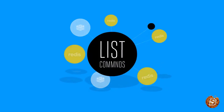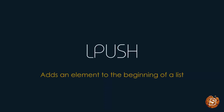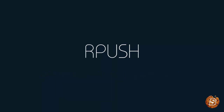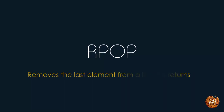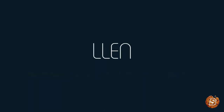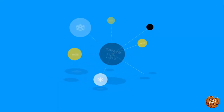Now let's look at the list commands used to work with lists in Redis. LPUSH adds an element to the beginning of a list; RPUSH adds to the end; LPOP removes and returns the first element; RPOP removes and returns the last element; LLEN gets the length of a list; and LRANGE gets a range of elements from a list. We'll explore all these commands in the next lecture.